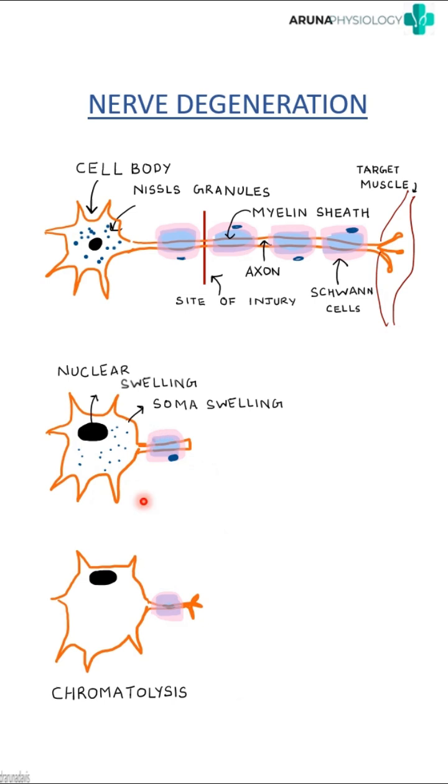There will be changes in the proximal stump, which are called degenerative changes, and in the anterograde direction we will have what is known as Wallerian degeneration.